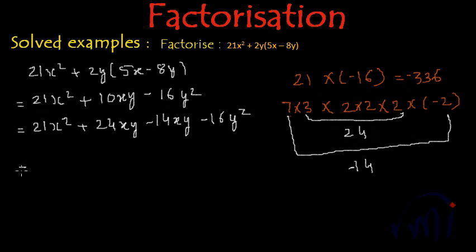And now we will group them. So I am making this and this as two groups. So from the first group we can take 3x common and inside the bracket we will have 7x + 8y.